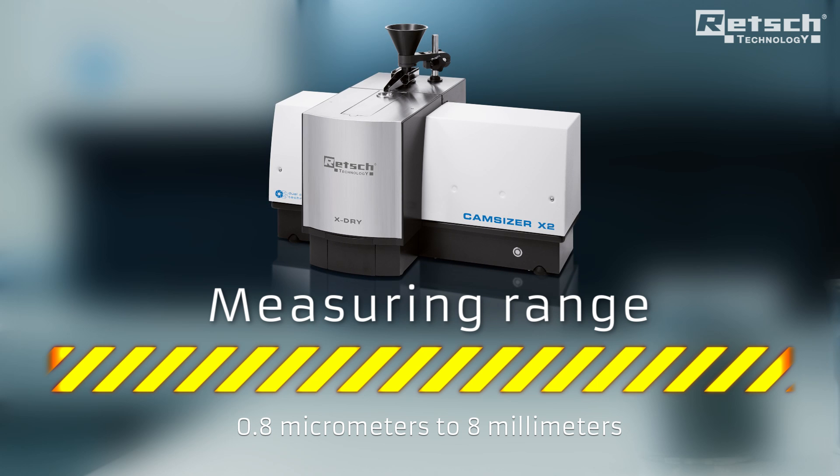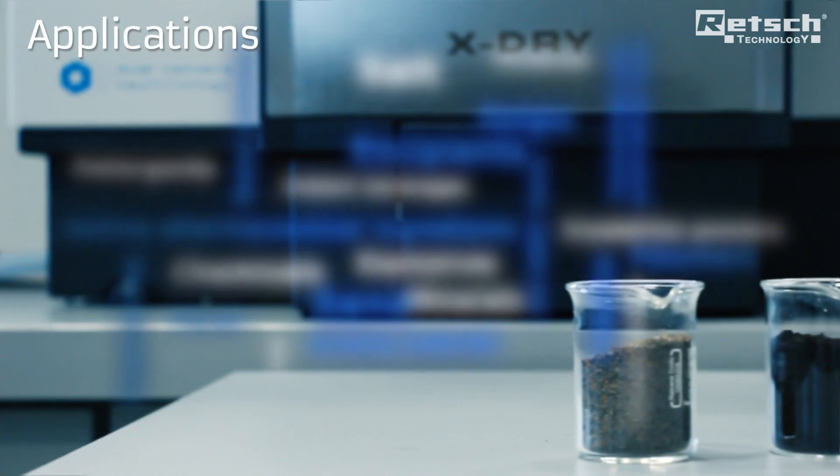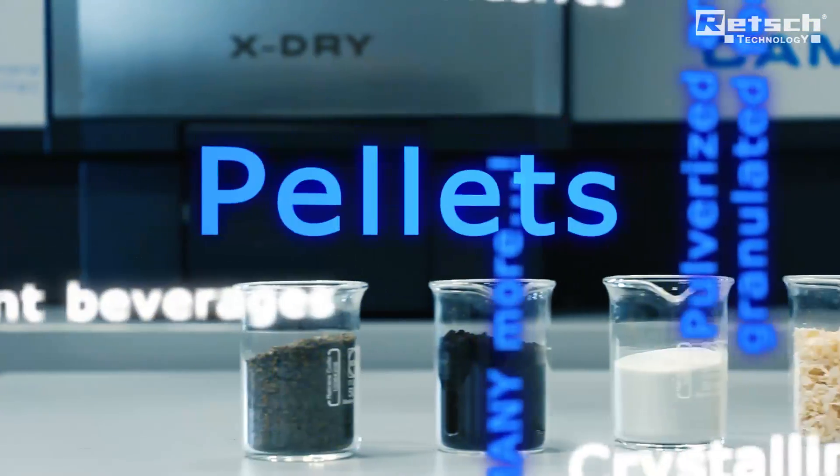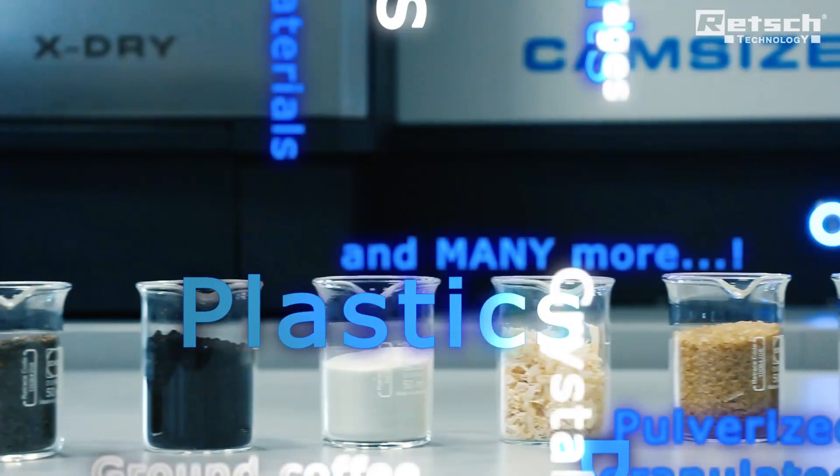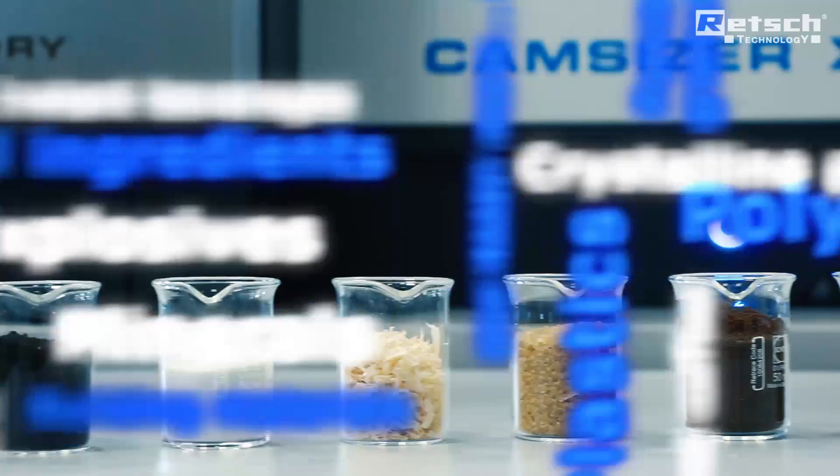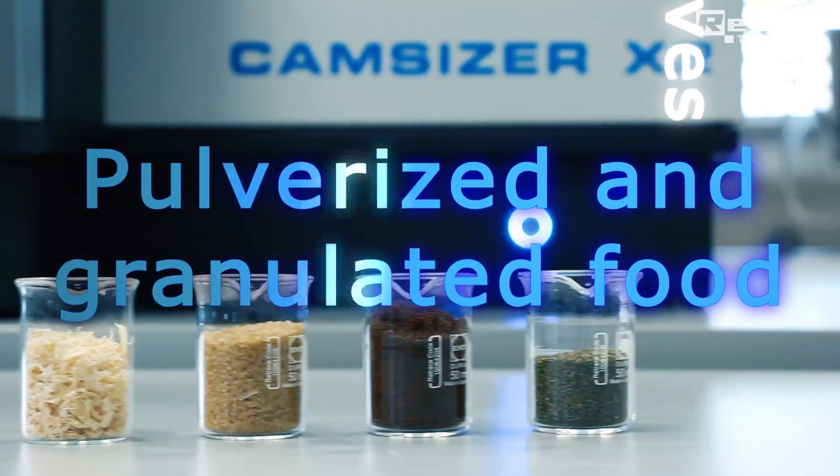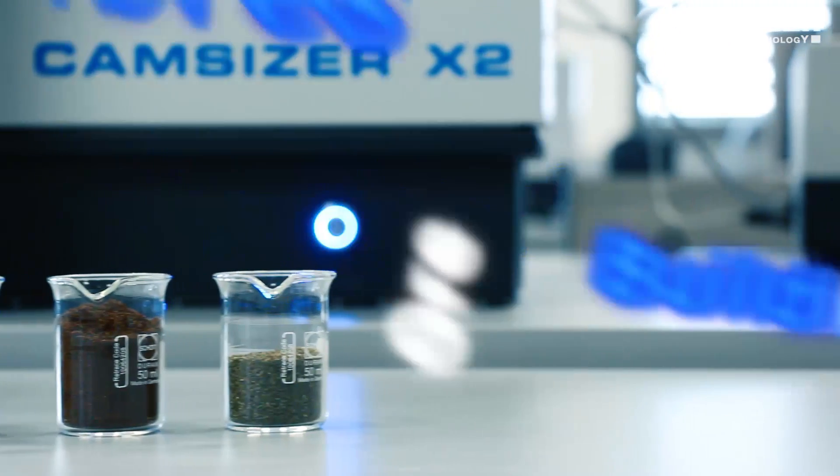This makes the CamSizer X2 excellently suited for measuring a great variety of samples such as active pharmaceutical ingredients as well as excipients and pellets, metal powders for powder metallurgy and laser sintering, plastics and polymers, sand and building materials, pulverized and granulated food, explosives, fibers, and many more.